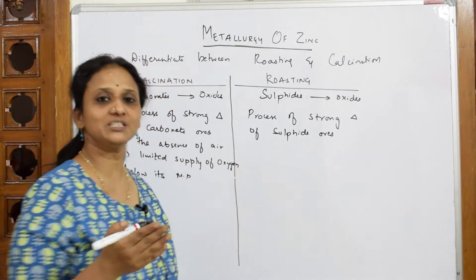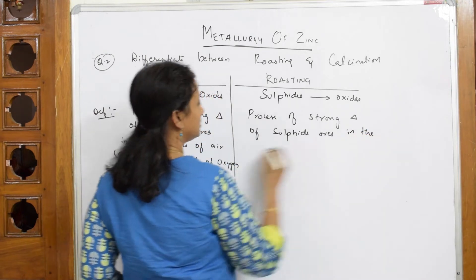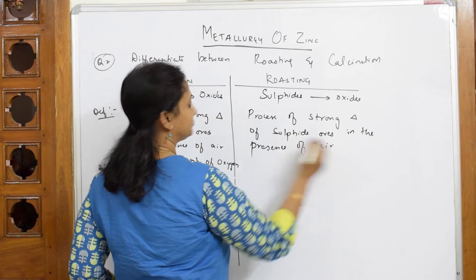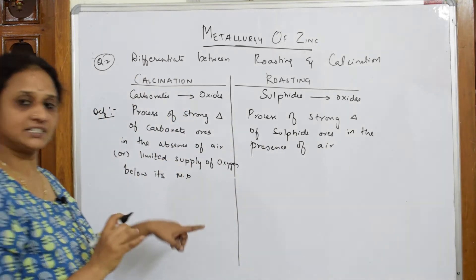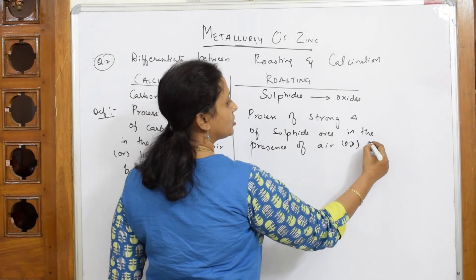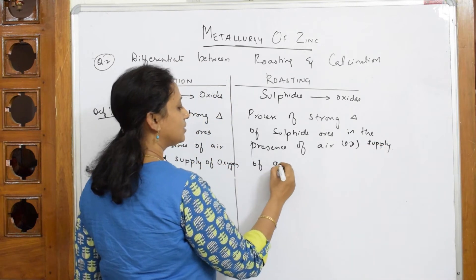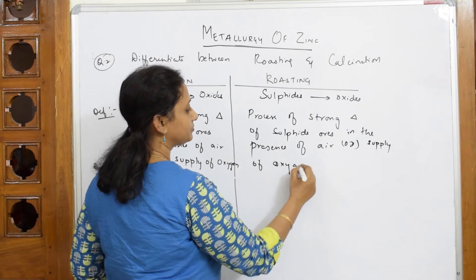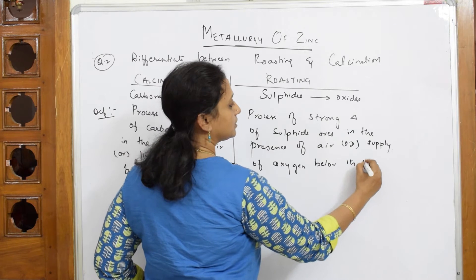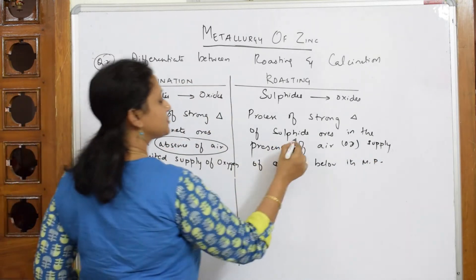Roasting is done in the presence of oxygen. Sulfide ores are heated in the presence of air — excess supply of air or oxygen — below its melting point. This is important. So calcination is in the absence of air, roasting is in the presence of air. That is the only difference you have to write.